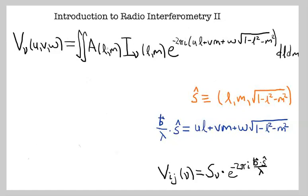The frequency dependence in this equation comes from the fact that U, V, and W are measured in wavelengths, so for a fixed geometric baseline, U, V, and W are completely frequency dependent. This full sky integral is just an extrapolation of the single-source equation, where we had the source spectrum and a phase term — now integrated over the entire sky using coordinates that parametrize direction and baseline length together.